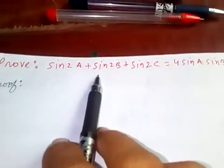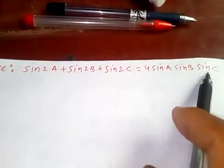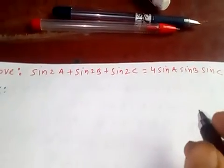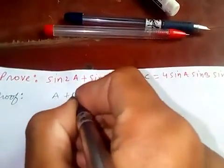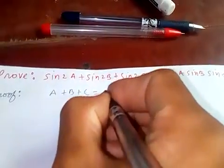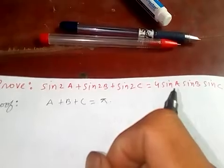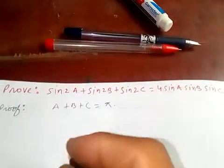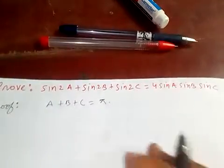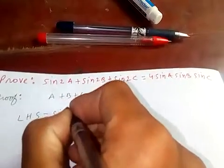Hi friends, let's prove that sin(2A) + sin(2B) + sin(2C) = 4·sin(A)·sin(B)·sin(C). Firstly, we must assume that A + B + C = π. This is the condition for a triangle, so from the left hand side: sin(2A) + sin(2B) + sin(2C).